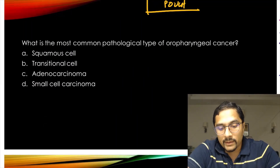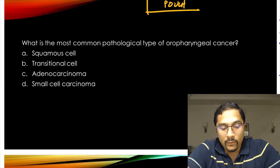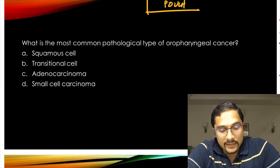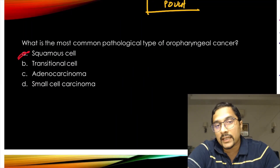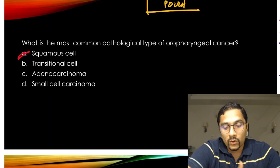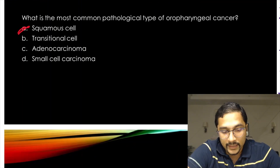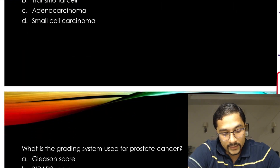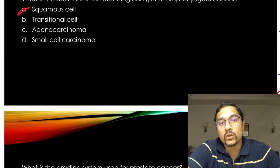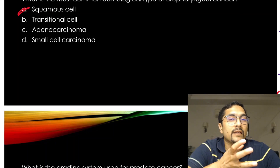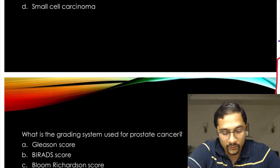What is the most common pathological type of oropharyngeal cancer? It is squamous cell cancer, with the most common site being the lateral border of the tongue.